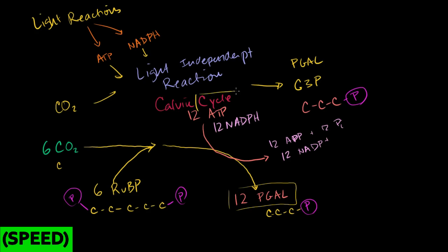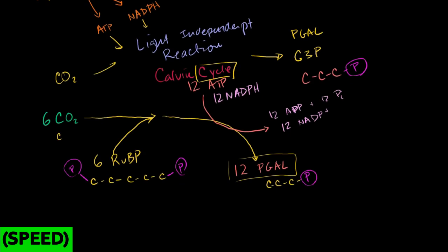So then we have these 12 PGALs. Now the reason why it's called a Calvin cycle, as you can imagine, we study the Krebs cycle, cycles we start reusing things. The reason why it's called the Calvin cycle is because we do reuse, actually, most of these PGALs.